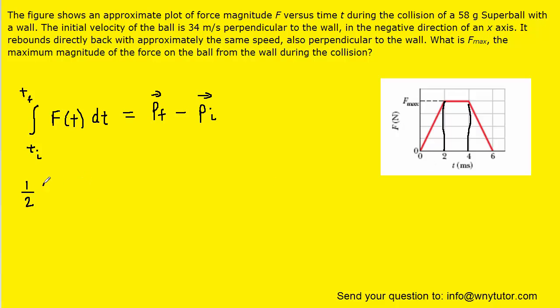The base of that triangle is 2 milliseconds. Note that you'll have to multiply it by 10 to the minus 3 to convert it into seconds. And then the height of that triangle is represented by F max, which we don't know, and in fact we're trying to solve for it. So we can label that F max.